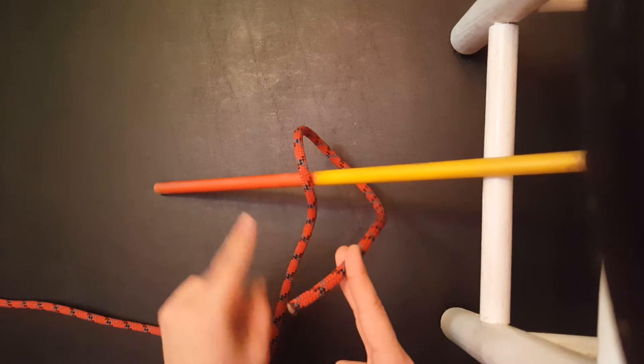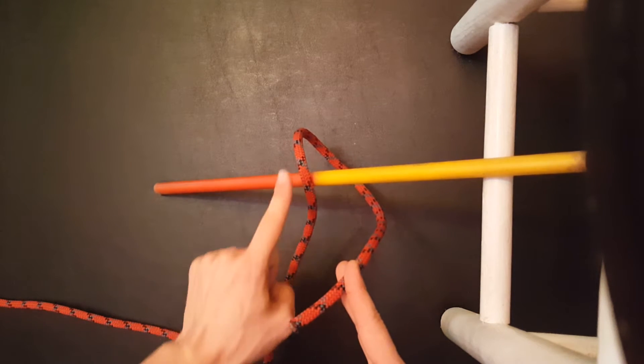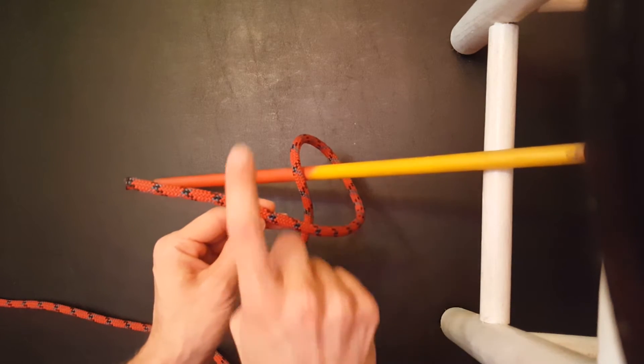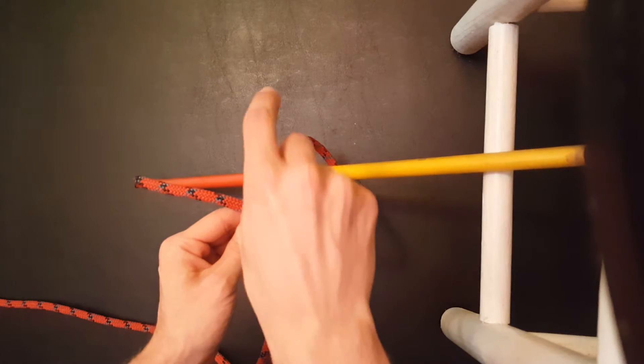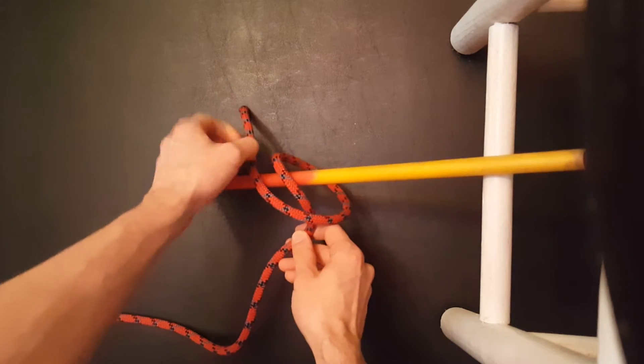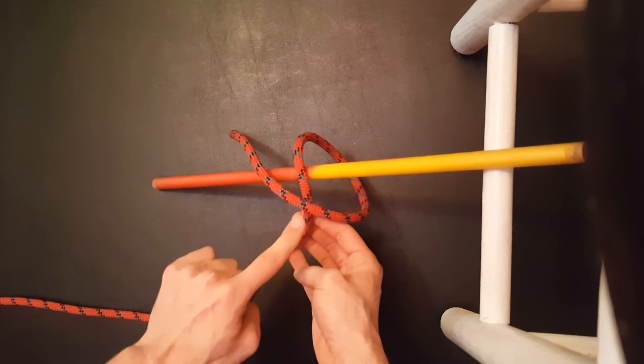We're then going to take your working end and cross over itself here and continue to wrap in the same direction, going over the other side. You'll notice we've created kind of like a little bit like an X right here. That's going to be important here in just a second.